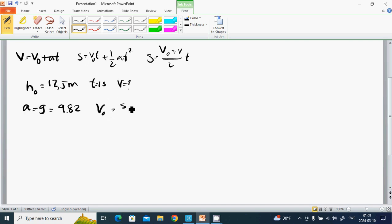V₀ equals S minus half aT² divided by T, which is 12.5 minus half times 9.82 times T² divided by T. And T is one, divided by one. It is 7.6 meters per second.